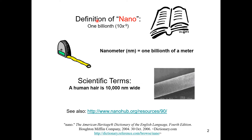What does it mean by nano? Nano by itself is basically a prefix which means one billionth. If you attach this prefix with a meter, it would mean nanometer, and nanometer means one billionth of a meter. Similarly, if you attach that prefix with the time unit — that is second — it would mean nanosecond, and nanosecond means one billionth of a second.